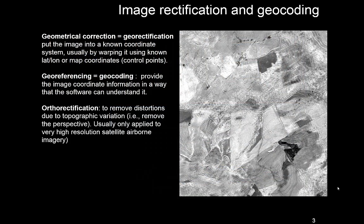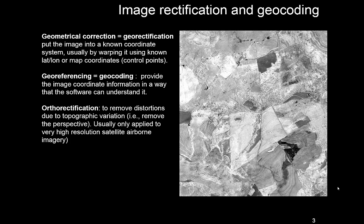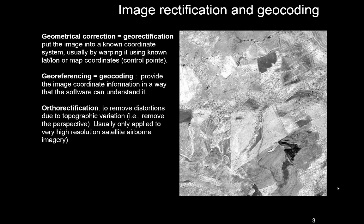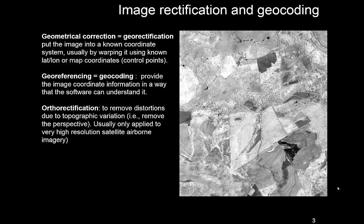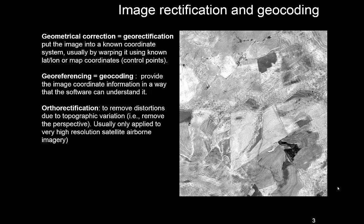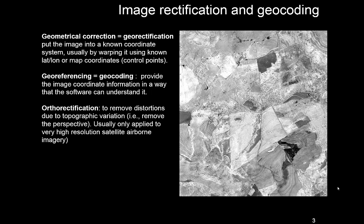Another thing we have to think about when using satellite data is image georeferencing, geocoding, and rectification. These are different terms for somewhat similar processes. Geometrical correction basically means that you assign a coordinate system to the image so you know where it is, and you warp the image if necessary to fit the known locations. Georeferencing — also called geocoding — is very similar; it provides that same coordinate information in a form the computer can understand.